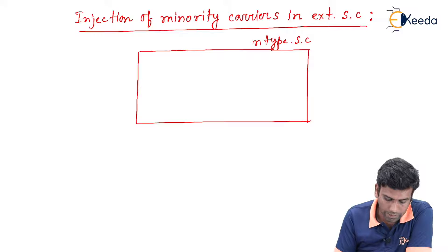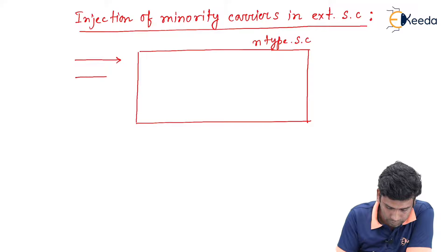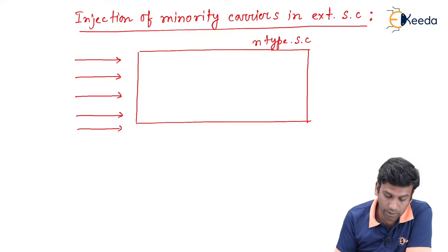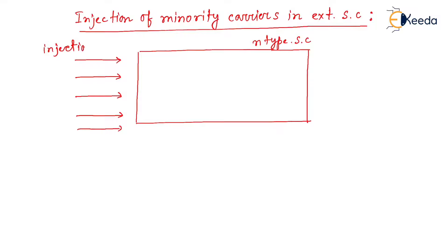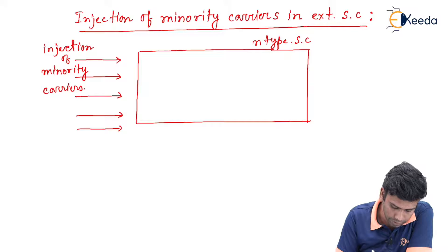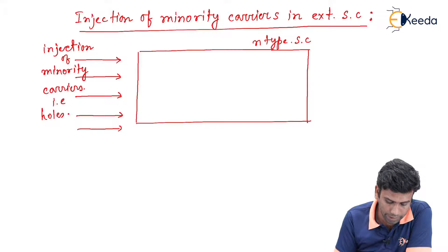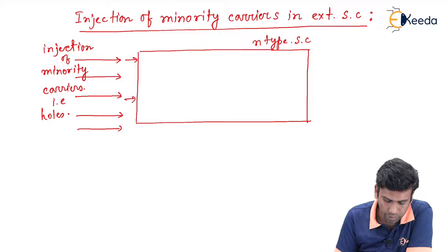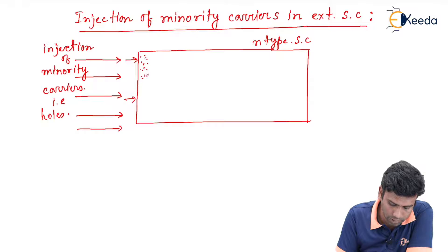Now, let us assume that we are injecting the minority carriers from this side. Since it is a n-type semiconductor, that means we are injecting holes here. Since we are injecting the minority carriers or holes inside this n-type semiconductor from this side, during the injection the concentration of the holes will be very high at this point of the semiconductor.